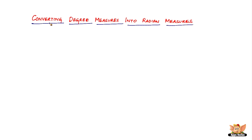In this video, let us look into converting degree measures into radian measures. In the previous video we did the other way around, converting radian measures into degree measures. One of the degree measures we are going to convert is 340 degrees. So how are we going to convert 340 degrees into a radian measure?